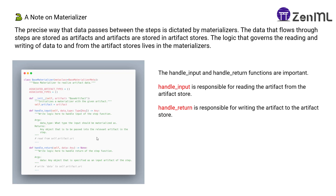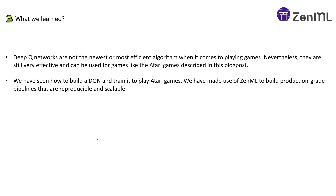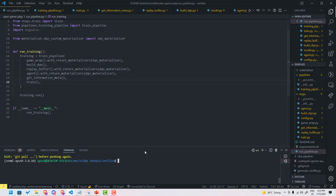Let's recap what we've learned. We learned about deep Q-networks and how to build a DQN and train it to play Atari games. We made use of ZenML to build production-grade pipelines that are reproducible and scalable. Deep Q-Networks are not the newest or most efficient algorithm for playing games, nevertheless they're very effective, as described in this video and the blog post linked in the description box below.